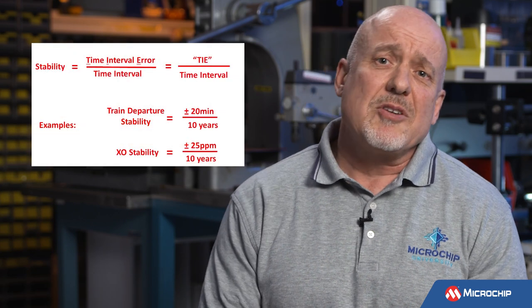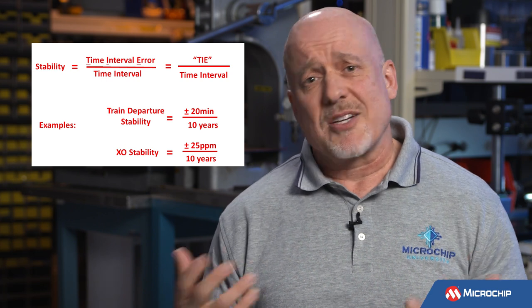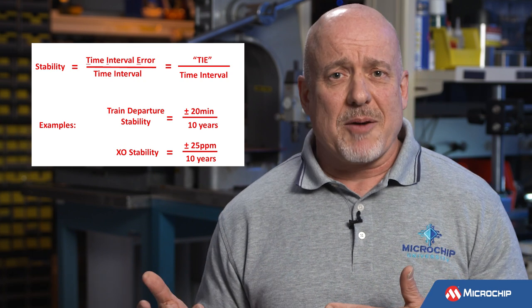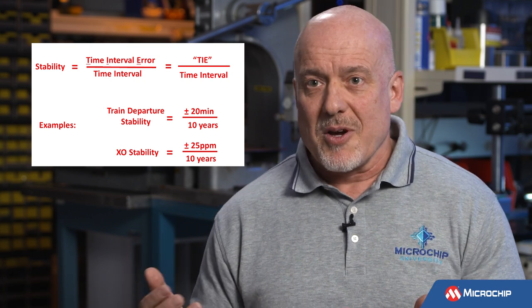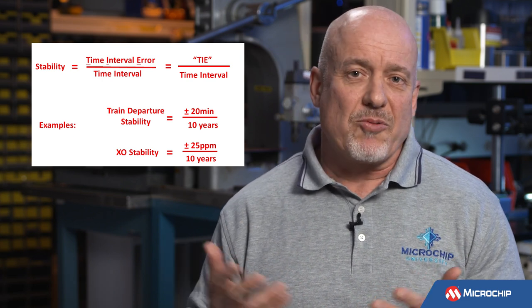Clock sources are described the same way with their stability parameter in their data sheets. For example, you may have a crystal oscillator that says in its data sheet it will remain within plus or minus 50 ppm — 50 parts per million — over a 10-year period, or perhaps plus or minus 25 parts per million over a 10-year period. That is what we see on the data sheet expressing that oscillator's stability.